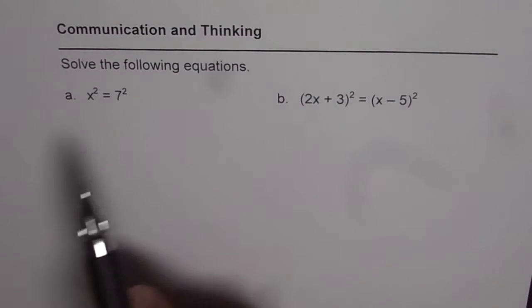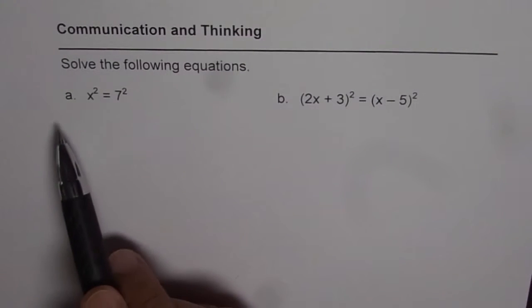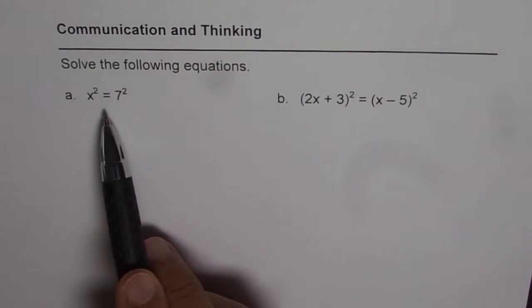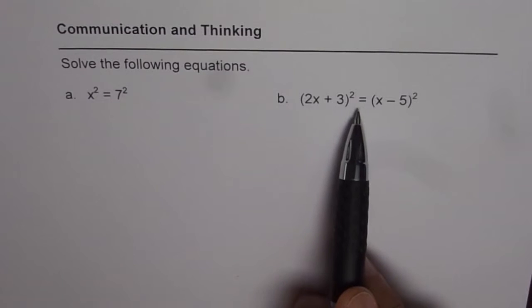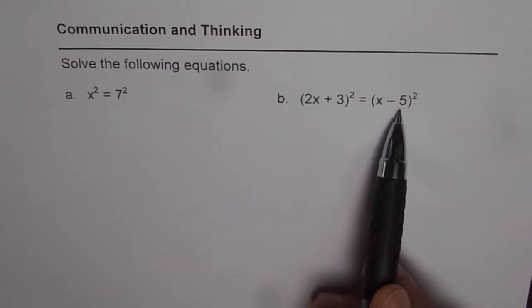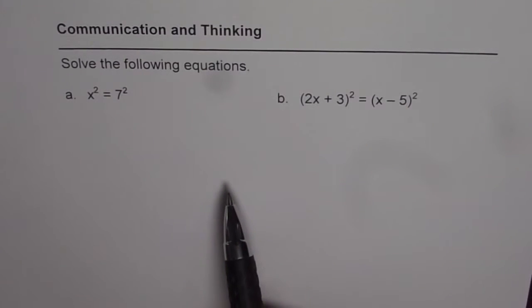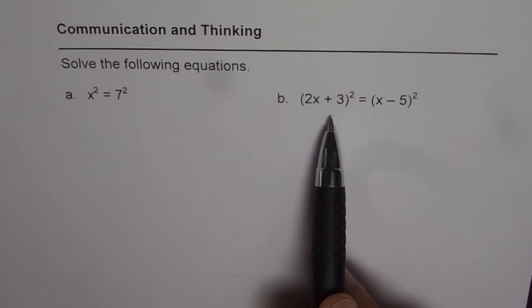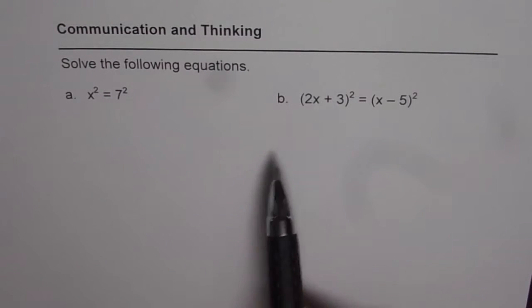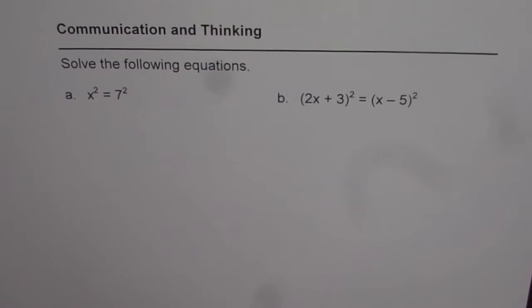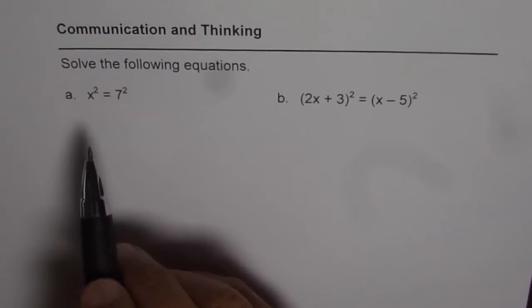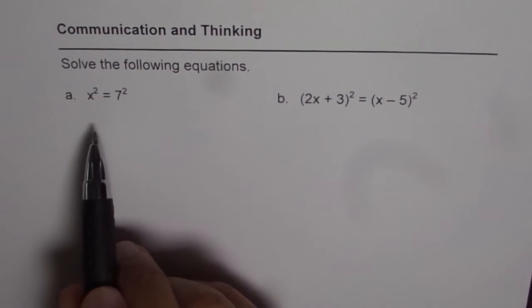Solve the following equations. Part A is x squared equals to 7 squared and part B is 2x plus 3 whole squared equals to x minus 5 whole squared. Now to understand how to solve part B I have taken a very simple example here in part A. Let's discuss how to solve a simple equation such as this.